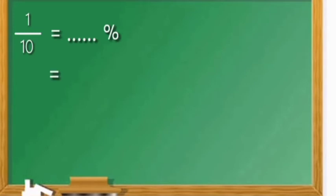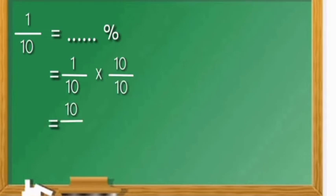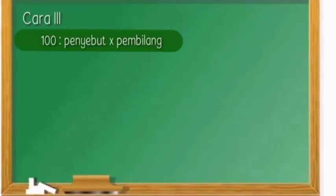Untuk soal lainnya: satu per sepuluh sama dengan berapa persen? Satu per sepuluh dikalikan sepuluh per sepuluh. Sama dengan satu kali sepuluh, sepuluh kali sepuluh sama dengan seratus. Sepuluh per seratus artinya sepuluh persen. Itu cara yang kedua.